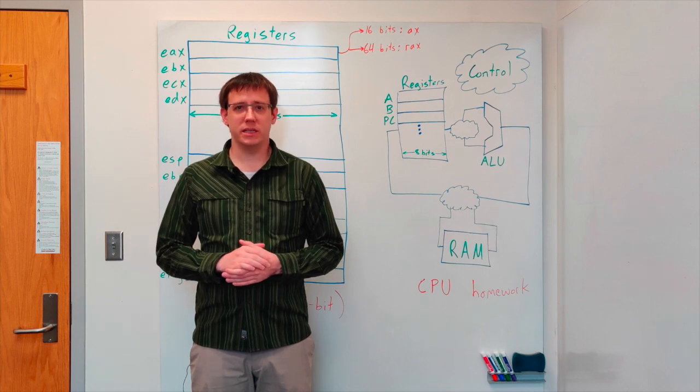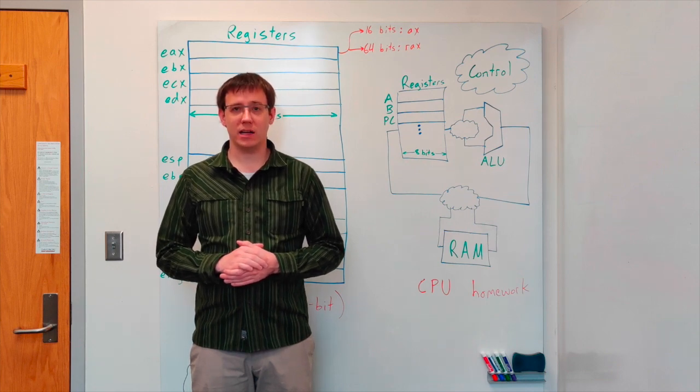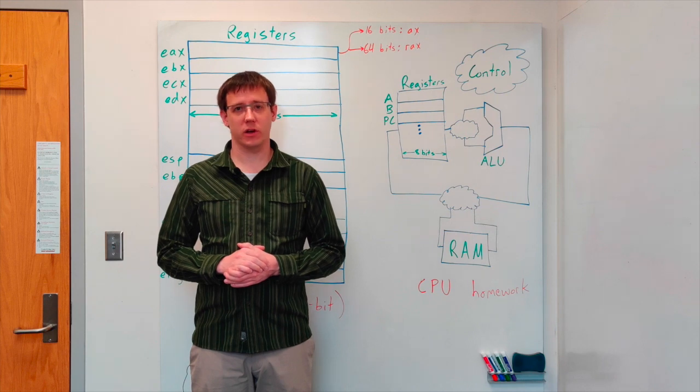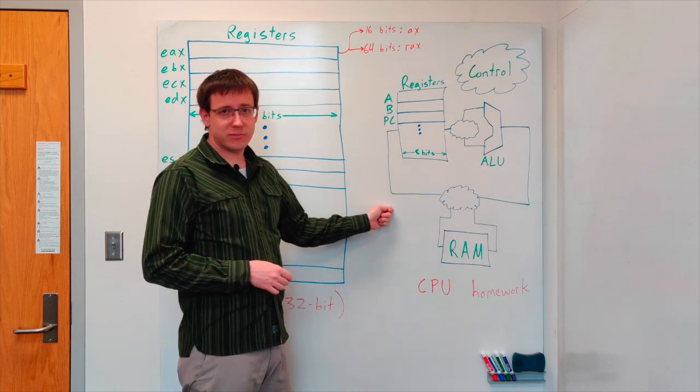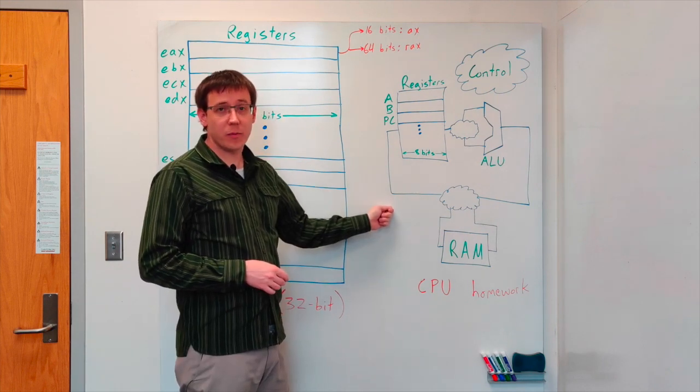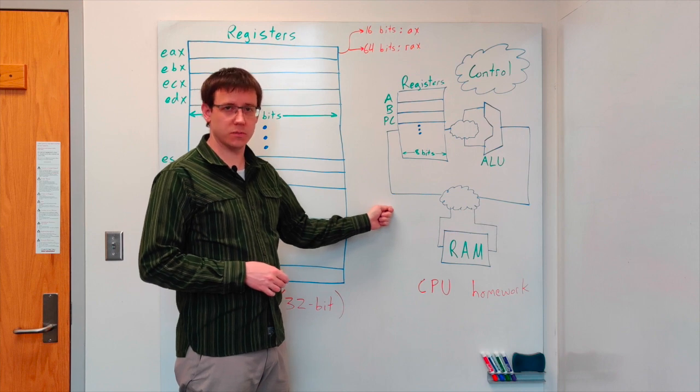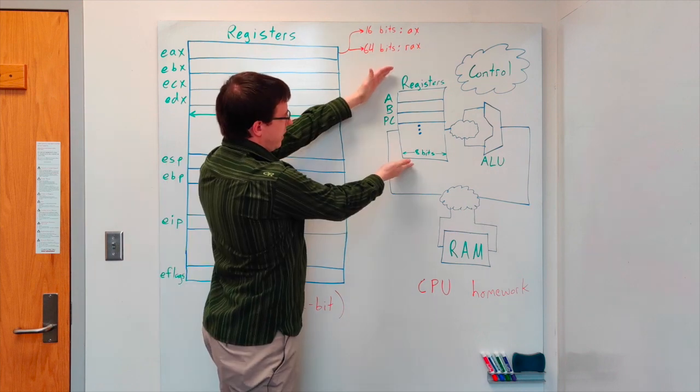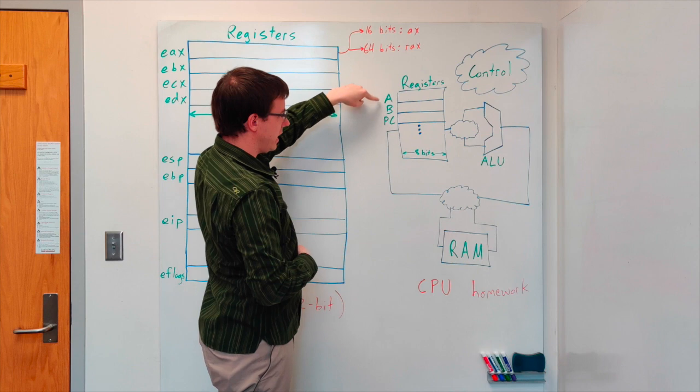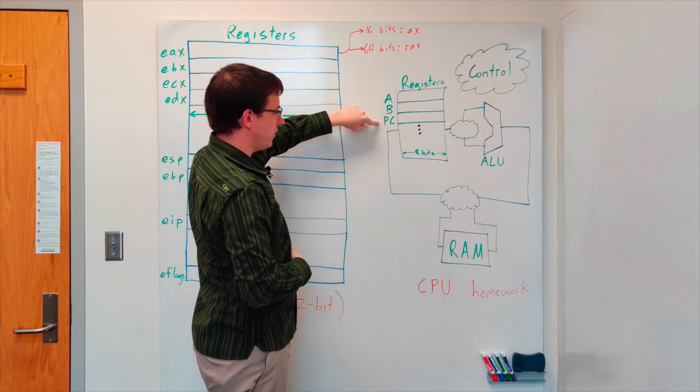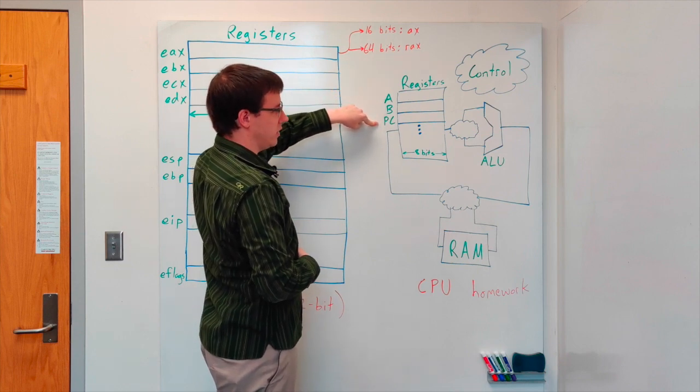Let's talk about how the CPU you're building in Logisim relates to actual CPUs with the x86 architecture. Here we have a very abstract diagram of the data path from your Logisim CPU. That data path includes a set of 8-bit registers including the A and B data registers and the program counter register that we call PC.